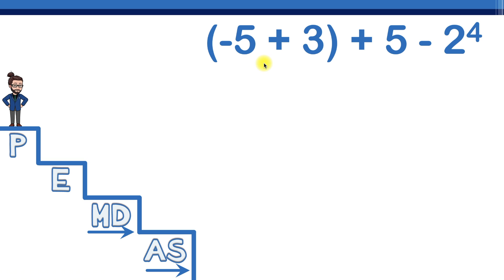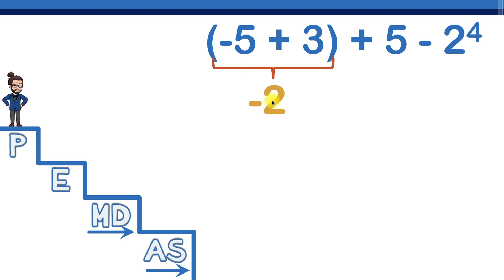At step number one we handle parentheses first, so we work on negative five plus three. That's like saying you owe someone five dollars but only have three — you can give them the three but you still owe two dollars. So the answer inside the parentheses is negative two. Then in a half step we bring down everything we haven't used yet: the plus sign, the five, the minus sign, and the two to the fourth power.